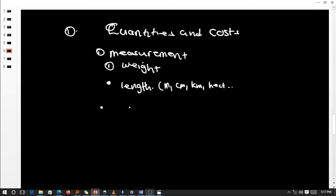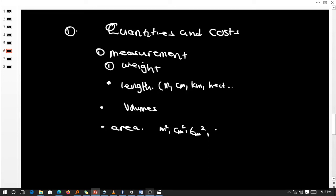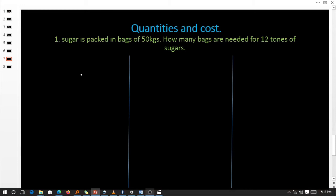Under quantities and costs, we will also look at volumes — for liquids or gases — for example, how many centimeters are in one liter. We shall also look at areas, which are measured in square units: meters squared, centimeters squared, kilometers squared, millimeters squared, decameters squared, and so on.